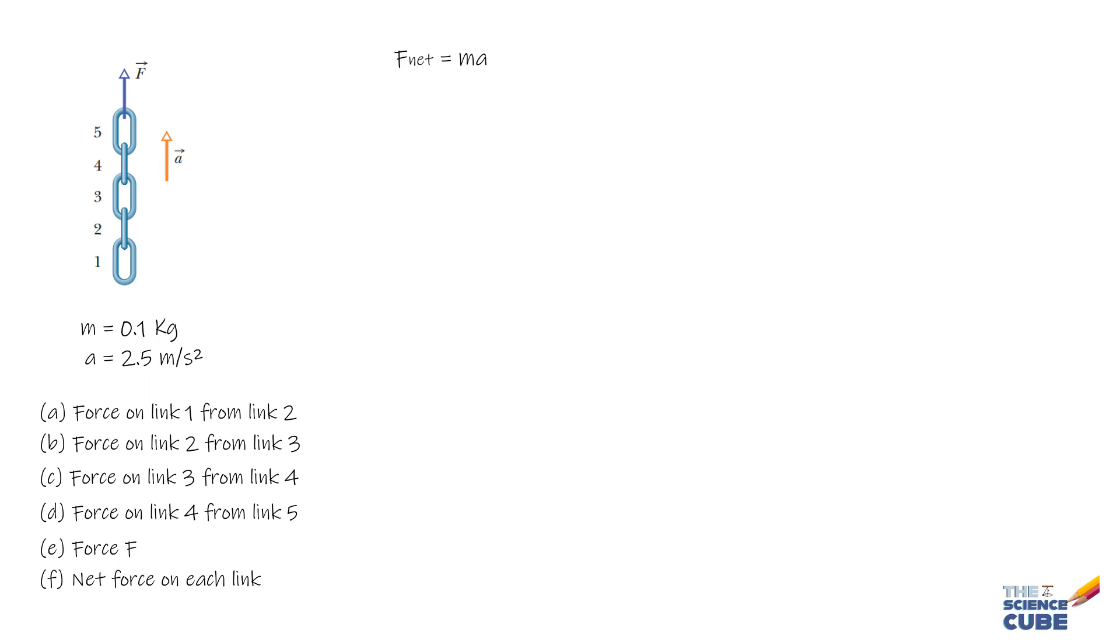Let us start with part A and find force on link 1 from link 2, which basically means what is the force exerted by link 2 on link 1. We will first make the free body diagram of link 1.